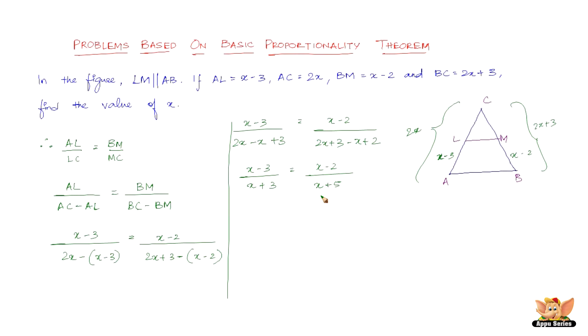This is the equation we've come down to. With simple cross multiplication, x minus 3 into x plus 5 equals x minus 2 into x plus 3. Expanding: x squared plus 5x minus 3x minus 15 equals x squared plus 3x minus 2x minus 6.